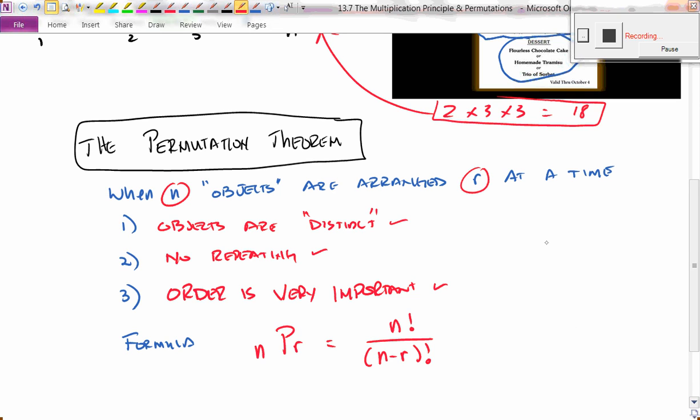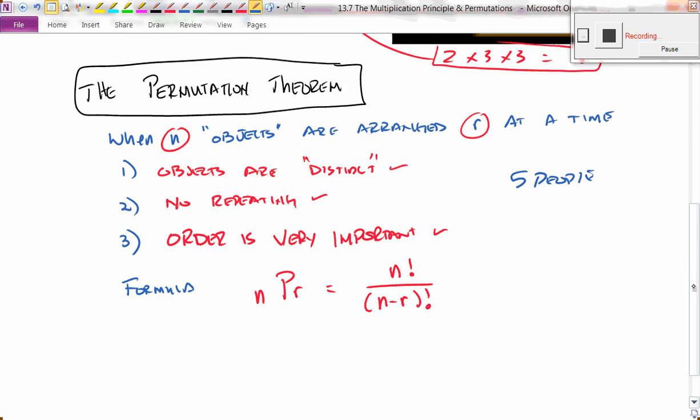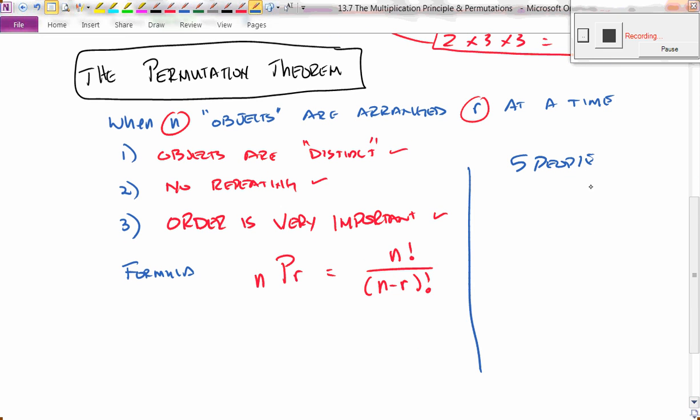So let me give you an example. Let's say you have five people, and you want to line up three of those people. Well, if you line up, so you've got person A, B, C, D, and E.